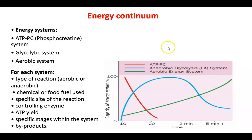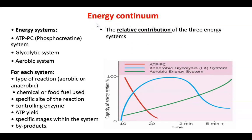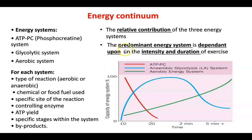The energy continuum refers to the relative contribution of the three energy systems. The predominant energy system is dependent upon the intensity and the duration of exercise. We need to get out of our heads that the three energy systems work separately — they all work together, but one is used more than the other two depending on intensity and duration.